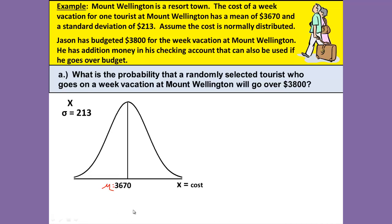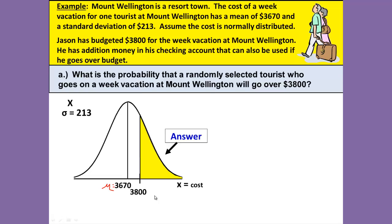We are now ready to mark the $3,800 on the curve — that's the number we're interested in finding the probability for. Going over $3,800 means we would shade above, or to the right of, the $3,800, and that will be our answer.